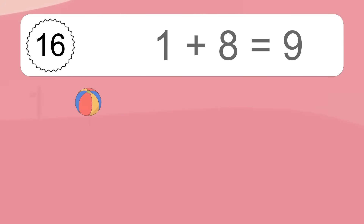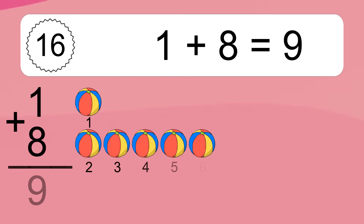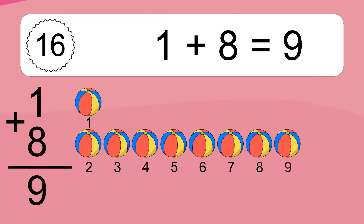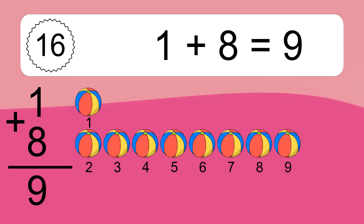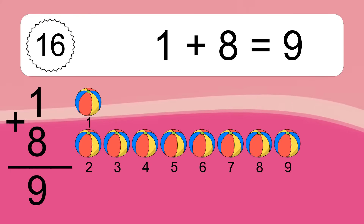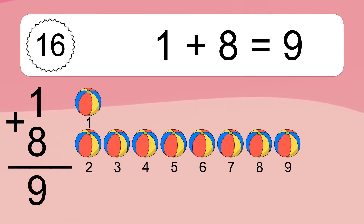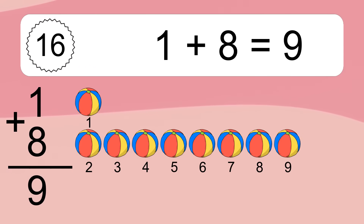1 plus 8 equals what? 1 plus 8 equals 9. Let's count it. 1, 2, 3, 4, 5, 6, 7, 8, 9.